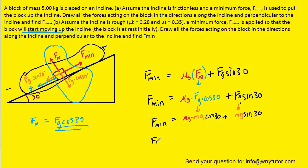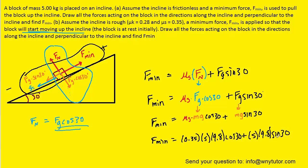Plugging in the known values: μs = 0.35 (the coefficient of static friction, not kinetic), mass = 5 kg, g = 9.8, cos(30°), sin(30°). With the calculator in degree mode, we get approximately 39.4 Newtons. This is the correct value of Fmin for Part B.